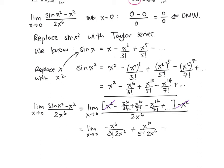Then minus x to the 14 over 7 factorial times 2x to the sixth, and a whole bunch more terms. Notice what happens: in the first term, x to the sixth in the numerator and denominator cancel, giving minus 1 over 3 factorial times 2. In the next term, x to the ten over x to the sixth gives x to the fourth. In the third term, x to the 14 over x to the sixth gives x to the eighth.